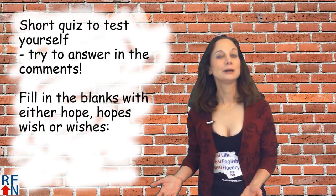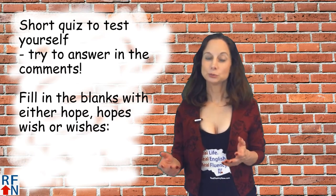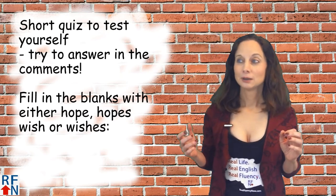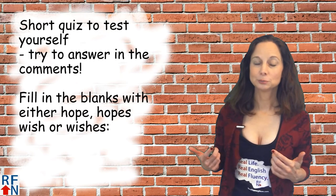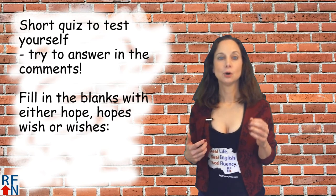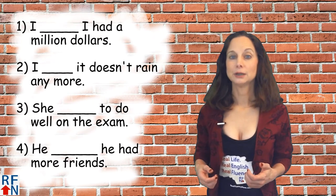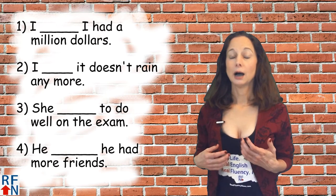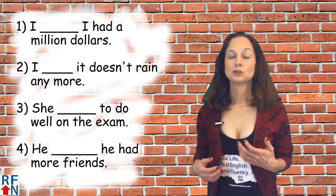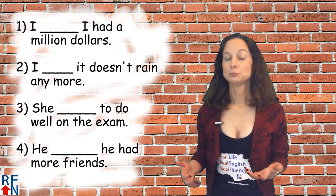Now it's time for the short quiz about wish and hope. The answers will be in the description — you may have to scroll down. Please don't cheat — try to answer to yourself or in the comments before you look at the answers. Fill in the blanks with either hope, hopes, wish, or wishes. Number one: I blank I had a million dollars. Number two: I blank it doesn't rain anymore. Number three: she blank to do well on the exam. Number four: he blank he had more friends.